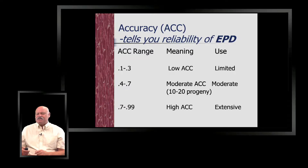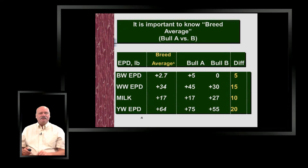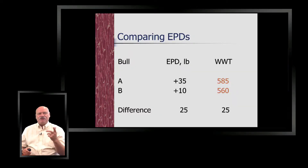Here's a comparison of two bulls. Bull A has a plus 35 for weaning weight — calves might weigh around 585 pounds. Bull B at plus 10 has a 560-pound weaning weight. The difference is 25 pounds. But you have to know breed average to understand what those plus 35 and plus 10 numbers actually mean.